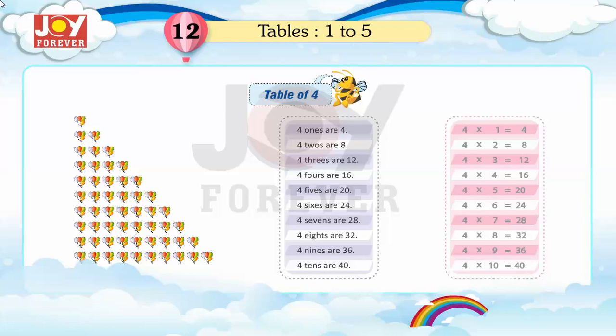4 sevens are 28, 4 eights are 32, 4 nines are 36, 4 tens are 40.